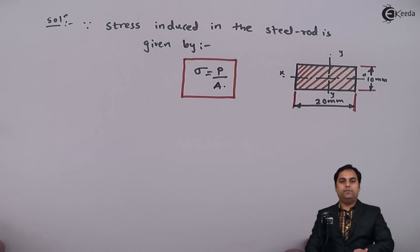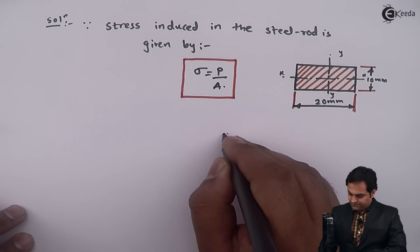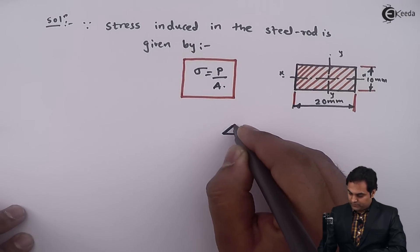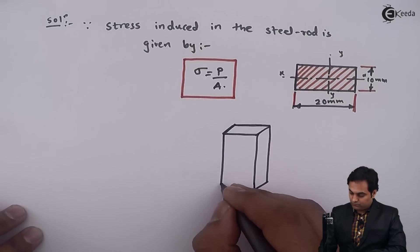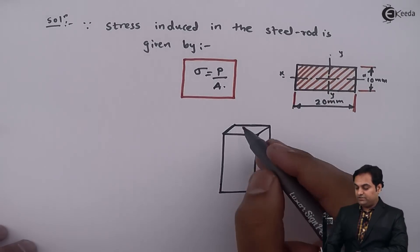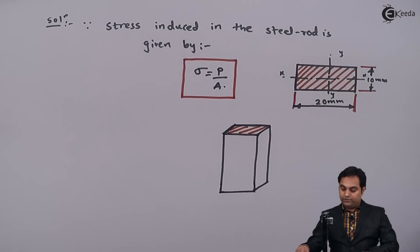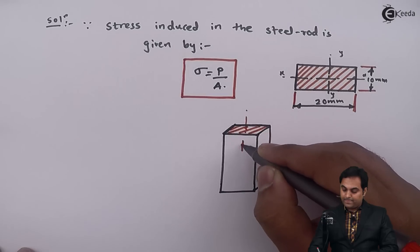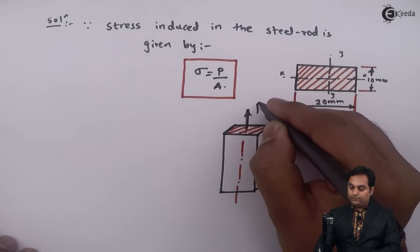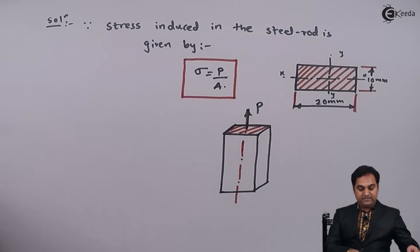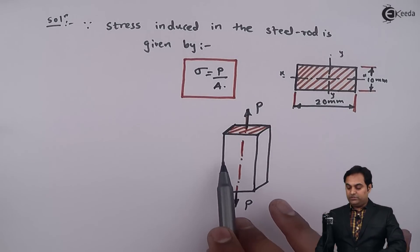This rectangular cross-section of the bar is subjected to an axial pull. If I draw the diagram, here I am drawing a 3D diagram to explain the concept. This rectangular block is subjected to an axial pull along its axis, and that pull is given as 300 kilo Newton. We have to find how much stress is induced in this bar.